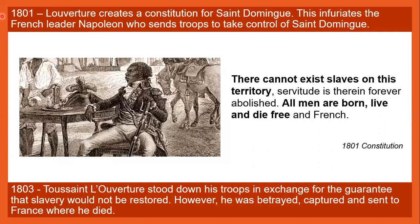In 1801, Louverture created a constitution for Saint Dominique. This frustrated the French leader Napoleon, who sent troops to take control of the country. The constitution stated: 'There cannot exist slaves on this territory. Servitude is therein forever abolished. All men are born, live and die free and French.' In 1803, Toussaint Louverture stood down his troops in exchange for a guarantee that slavery would not be restored. However, he was betrayed, captured and sent to France, where he died.